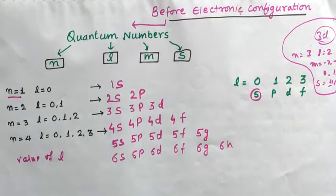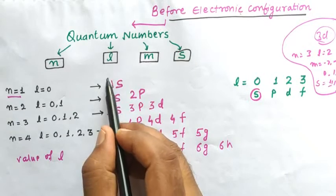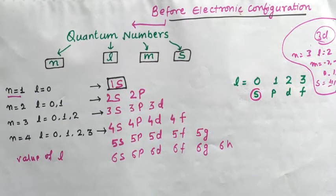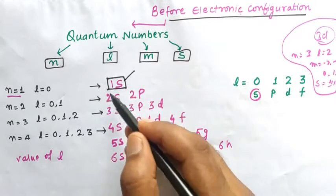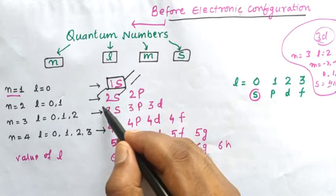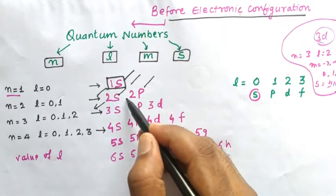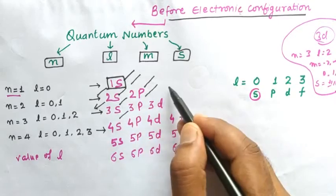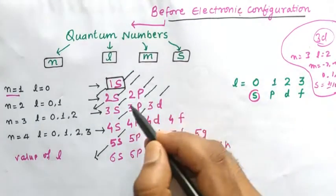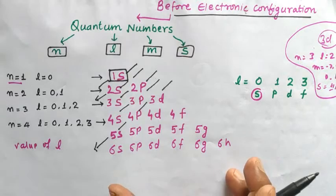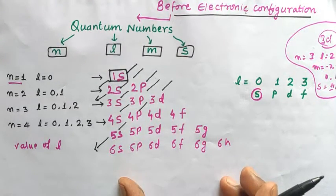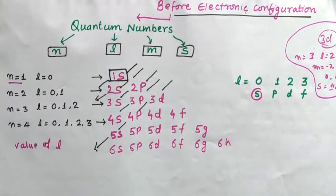Each orbital written here can be represented as a box. The electrons will fill in increasing order of energy: first 1S, then 2S, then 2P, 3S, 3P, 4S, 3D, 4P, 5S - the electrons will enter like this. Later we will discuss Aufbau principle, Pauli's exclusion principle, Hund's rule, and how to write electronic configuration.